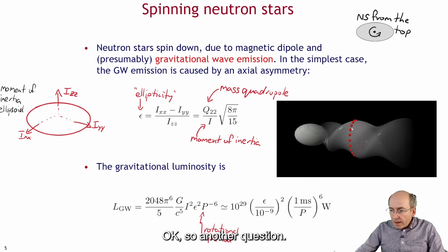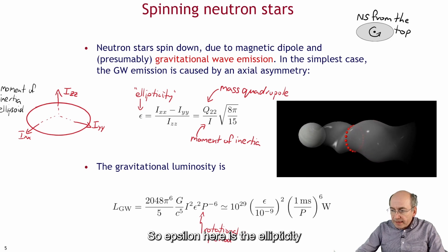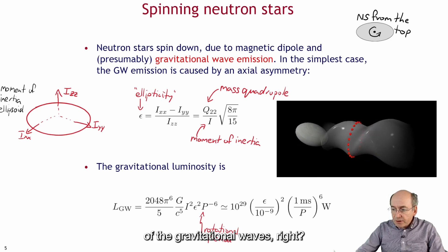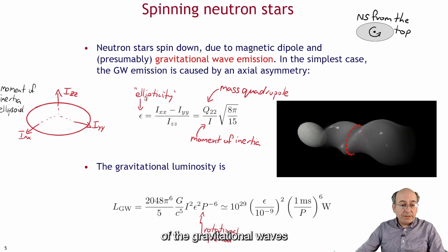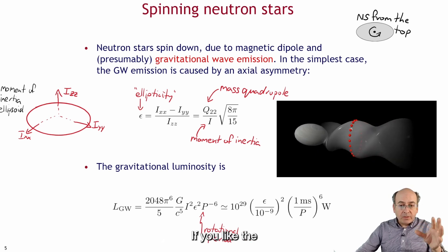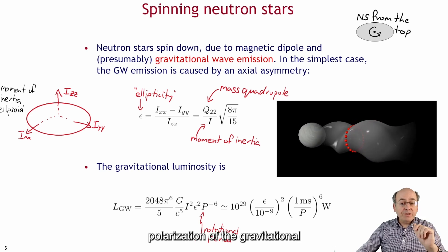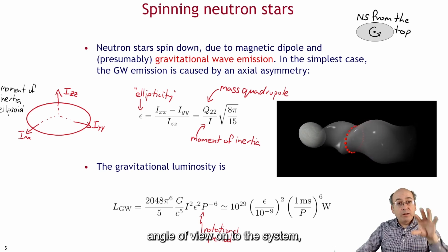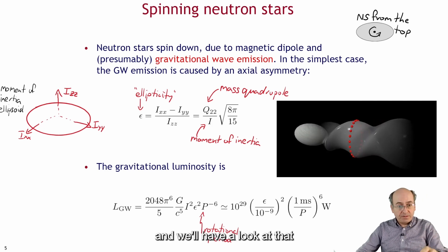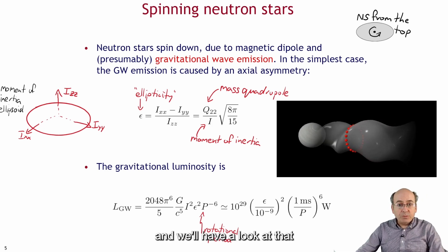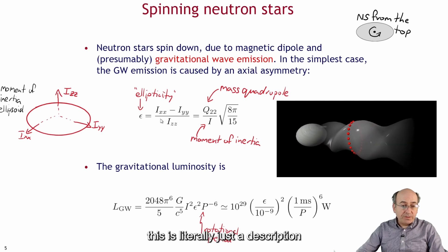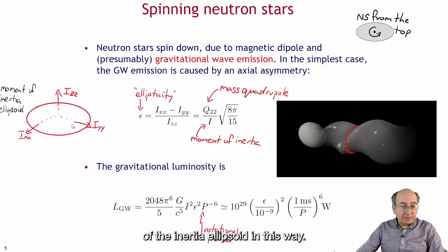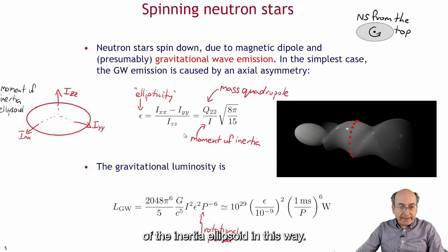Okay so another question, so epsilon here is the ellipticity of the gravitational waves right? No it's not actually. The ellipticity of the gravitational waves, if you like the polarization of the gravitational waves actually depends on our angle of view onto the system and we'll have a look at that in a sec. But this is literally just a description of the moment of inertia ellipsoid in this way.